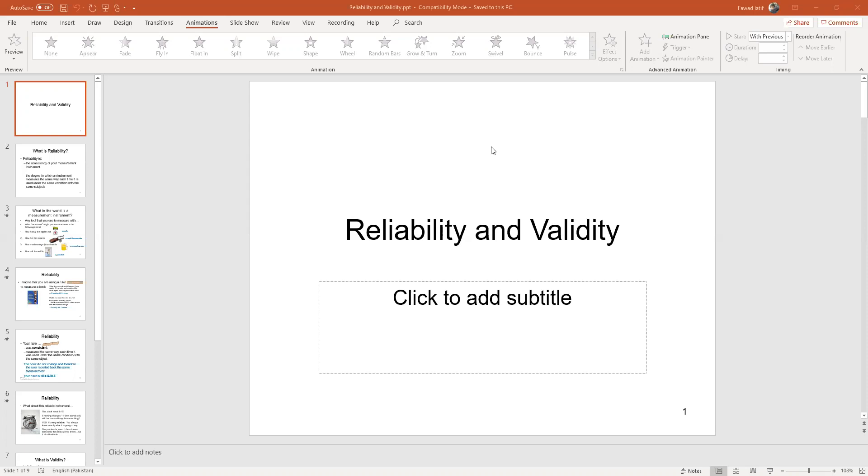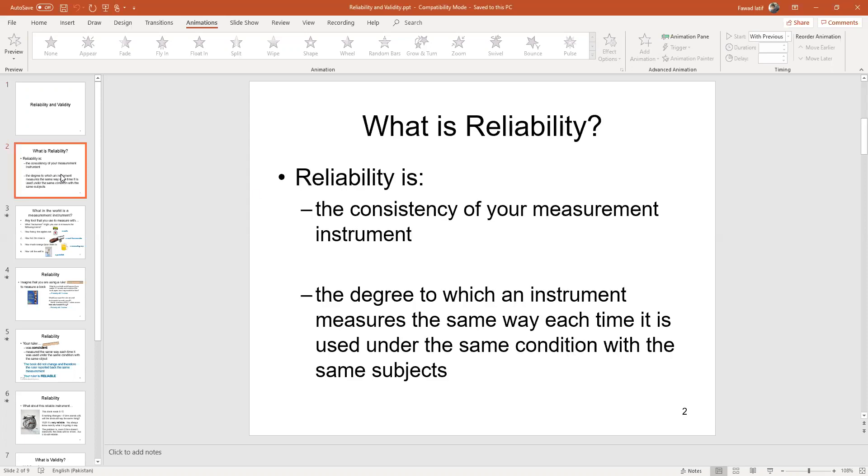So what is reliability? Reliability is the consistency of your measurement instrument, the degree to which an instrument measures the same way each time it is used under the same condition with the same subjects.